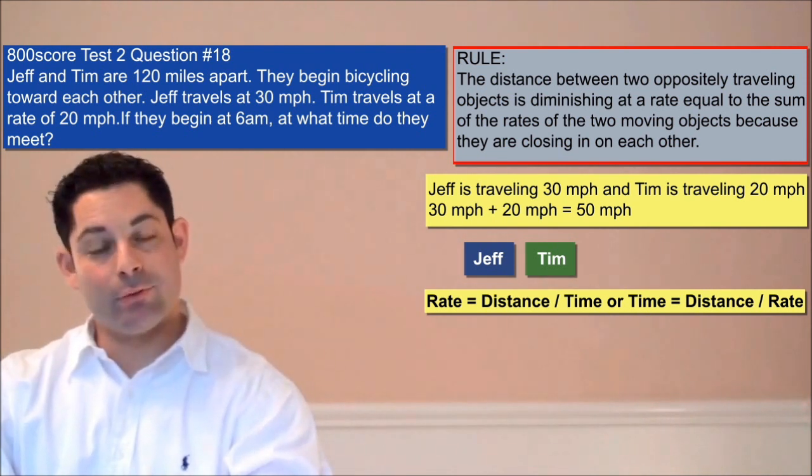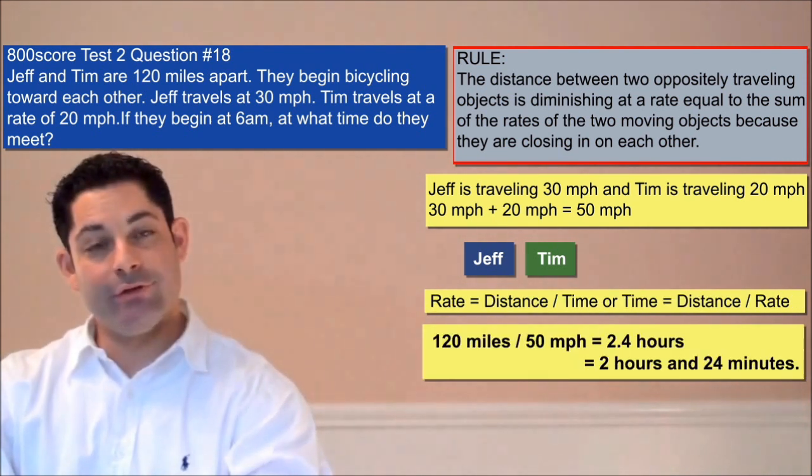So by substituting our known quantities, we have 120 over 50 equals 2.4, or 2 hours and 24 minutes.